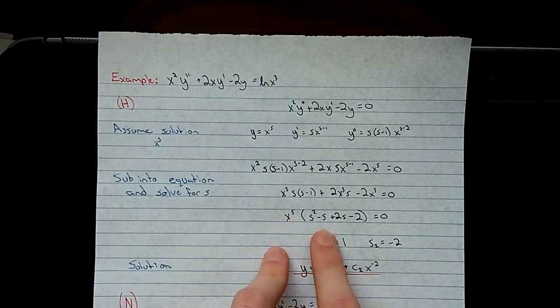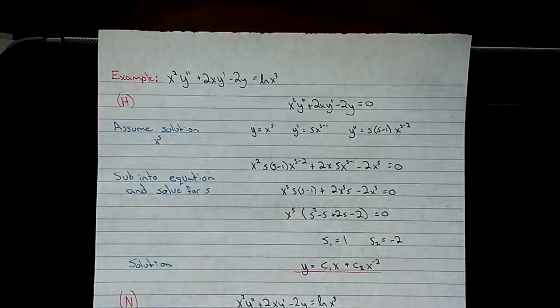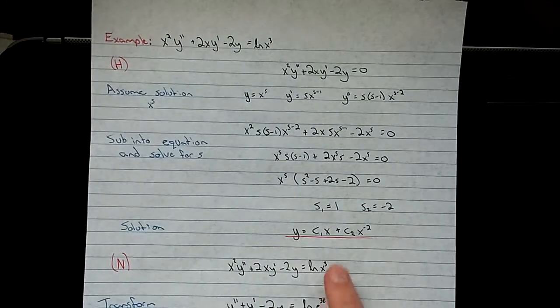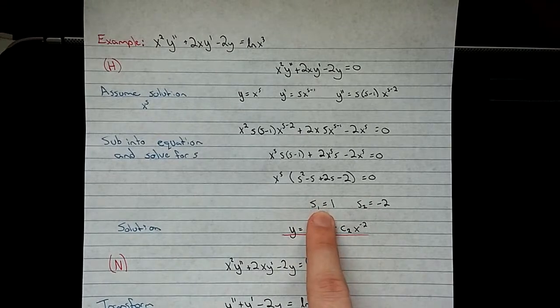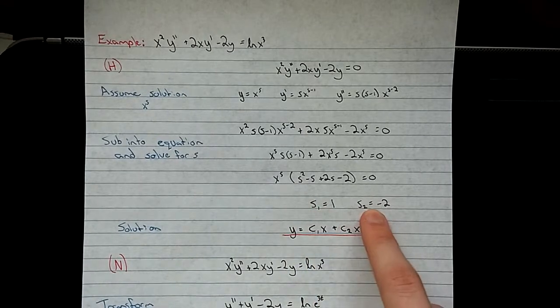You see, you can pull out the x to the power of s, and this just leaves you with a quadratic equation. You factor that and solve it. You get s1 equals 1, s2 equals negative 2.